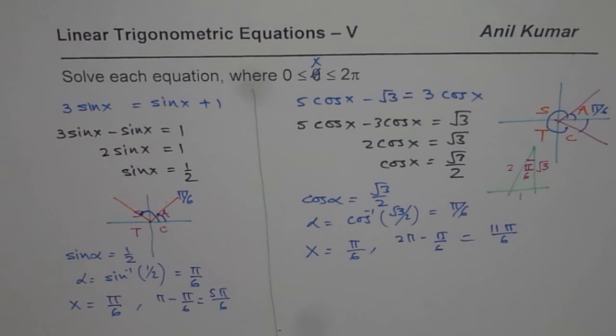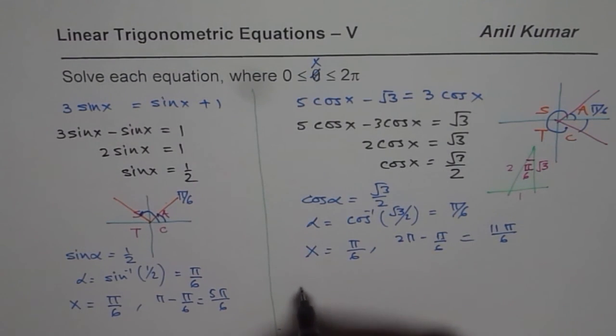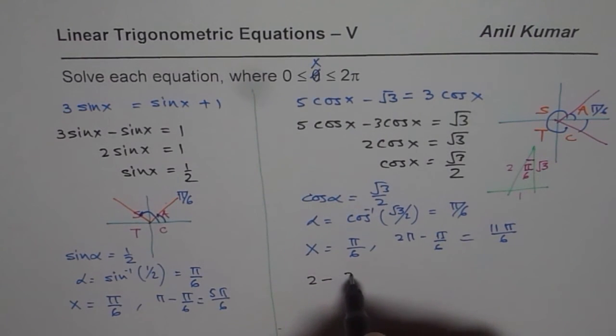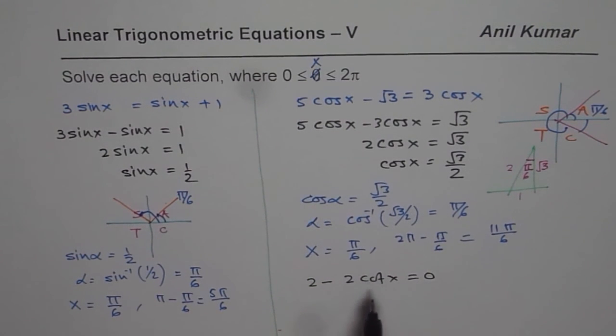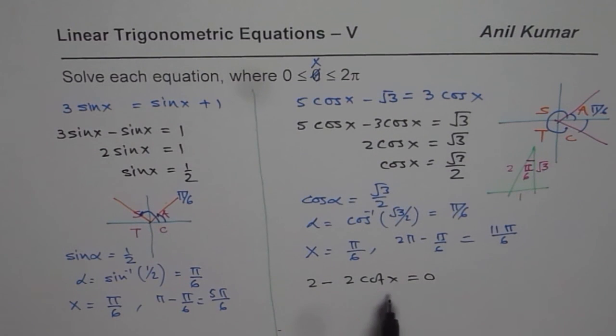In the next video, we will consider trigonometric ratios which will be involving secondary trigonometric ratios, that is kind of 2 minus 2cot(x) equals 0. Remember, cot(x) is 1 over tan(x). So if you have to use calculator, you may have to write this in terms of tan(x) and then find the solution. So we will see how to solve trigonometric equations involving reciprocal of primary trigonometric ratios.